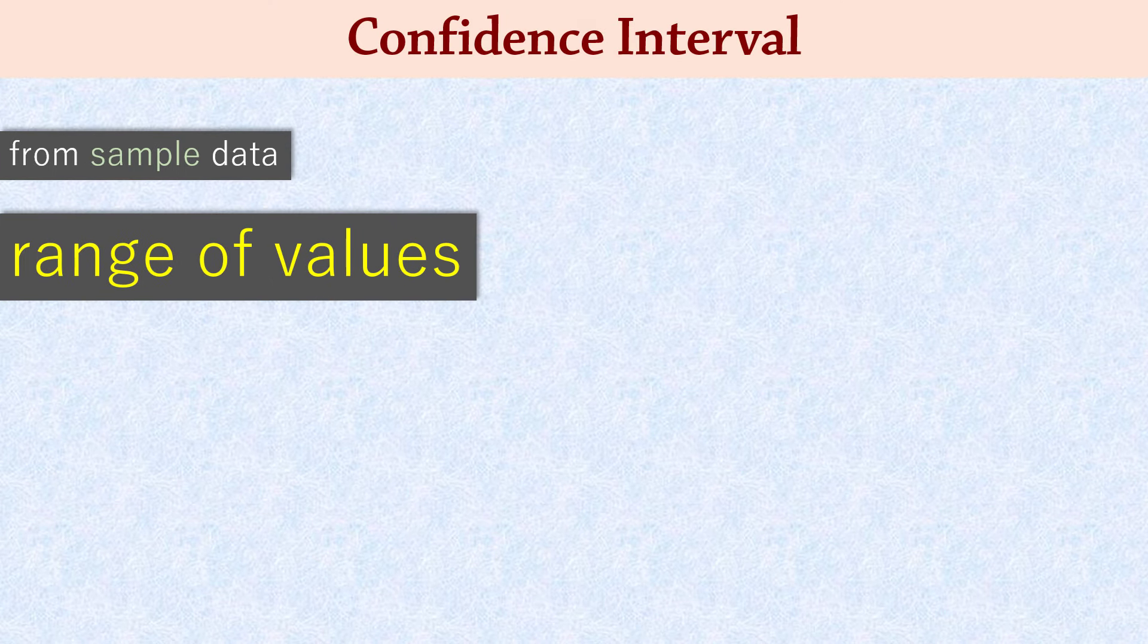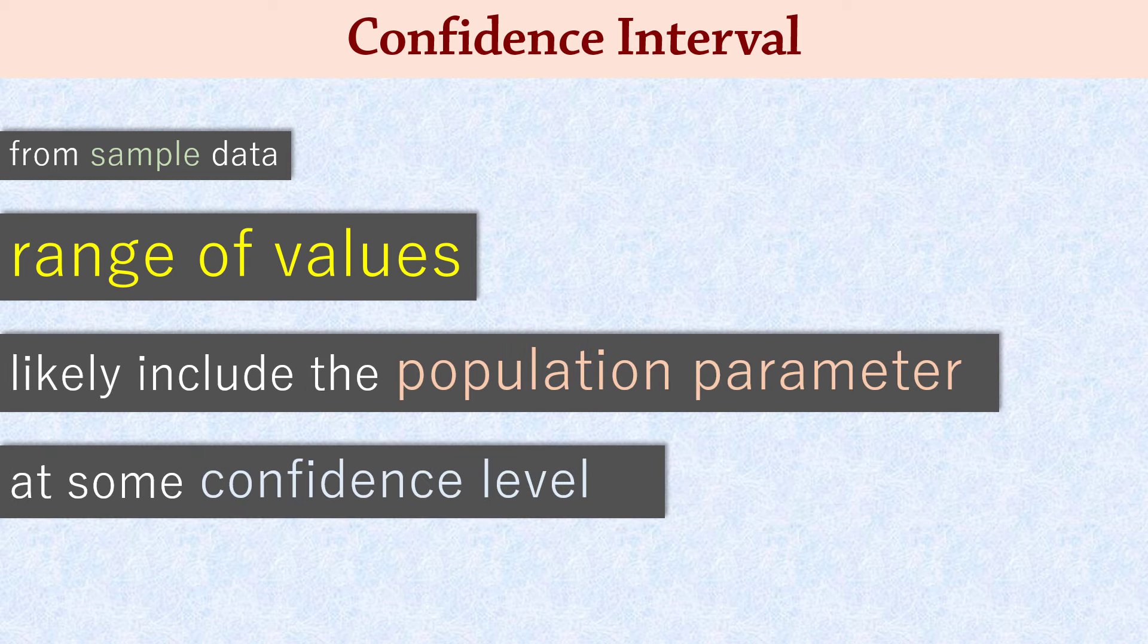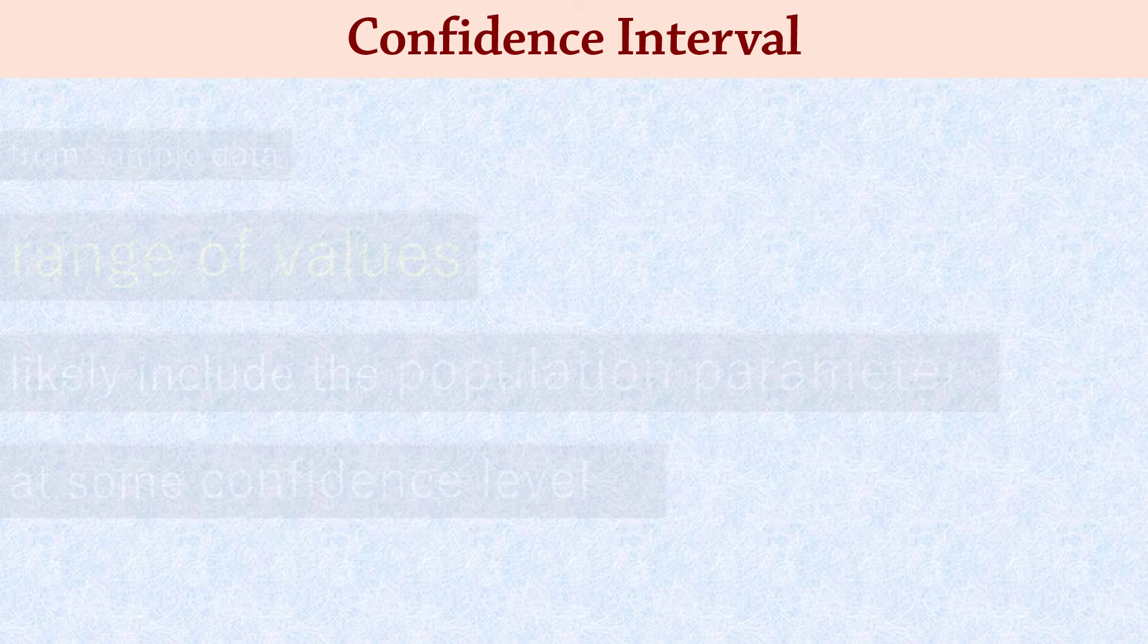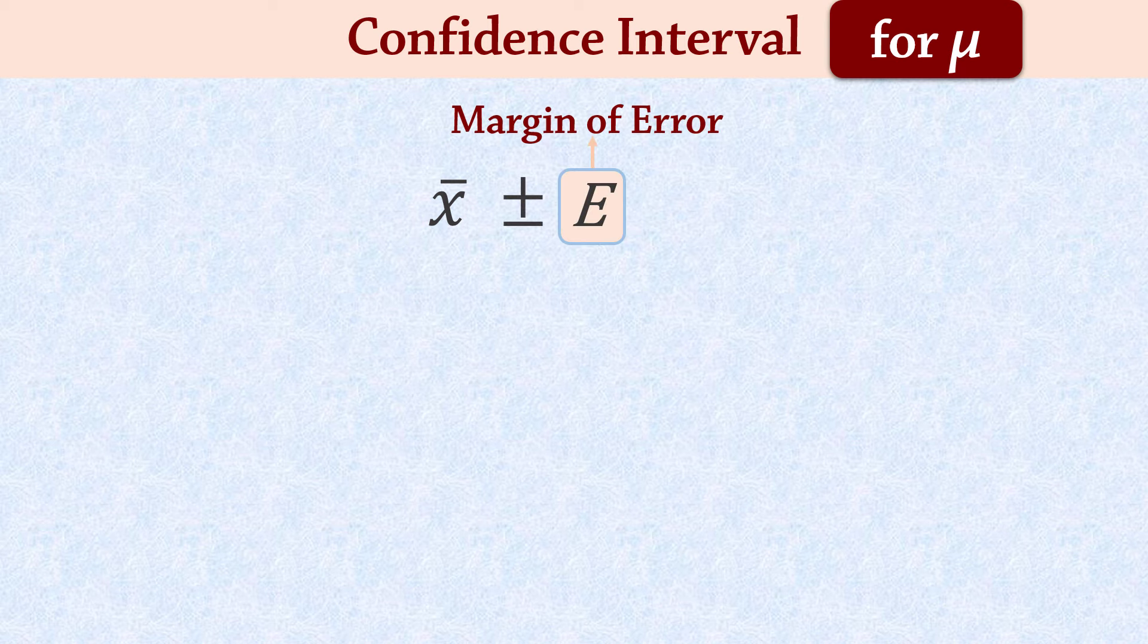A confidence interval constructed from sample data is a range of values that is likely to include the population parameter at some specified confidence level. The confidence interval for a population mean is determined by taking the sample mean, the point estimate, and subtracting and adding the margin of error to it.